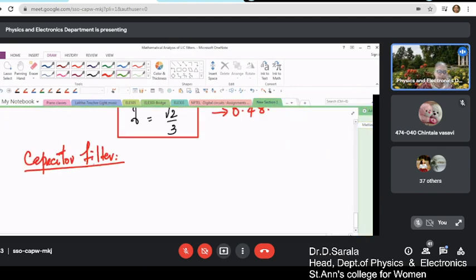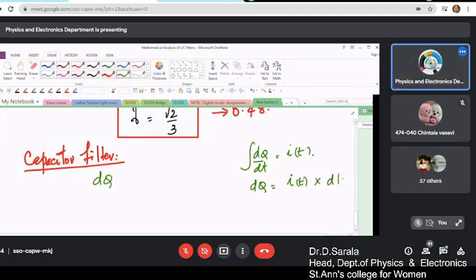So when it is something like a triangular wave, then the charge across the capacitor, you know dq by dt is the current. So the charge can be integral dq by dt is I of t. So if you want dq, it is the current as a function of time t into dt.